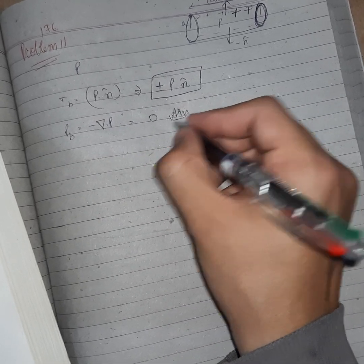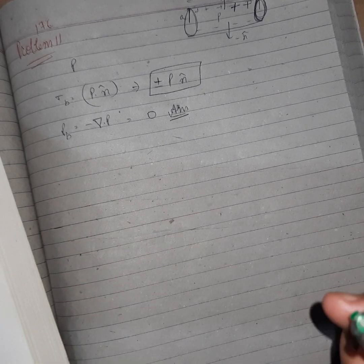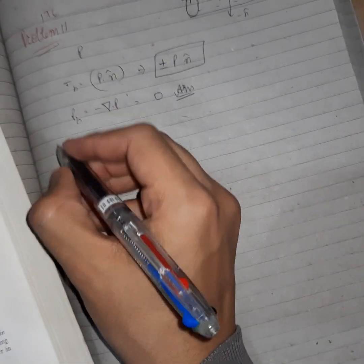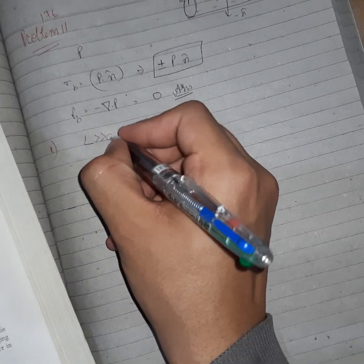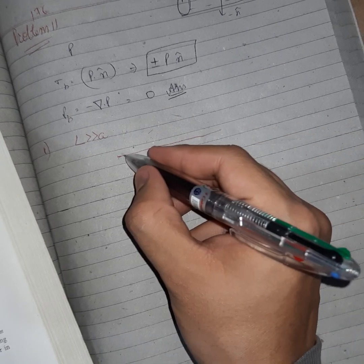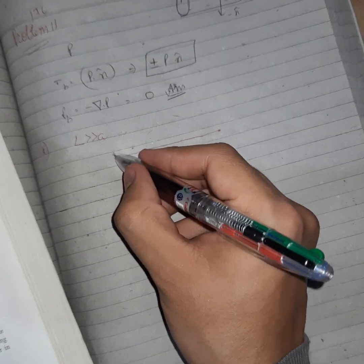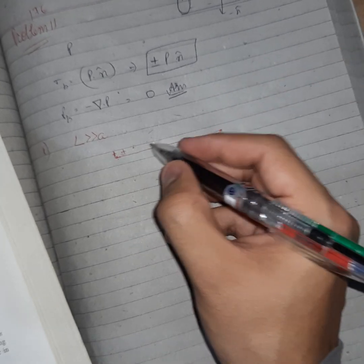These were the bound charges. Now let us sketch the electric field for different sections. For number one, l very very greater than a. It means that length has become very large and radius is now very small, so it will be acting like a dipole. Suppose this is the axis.